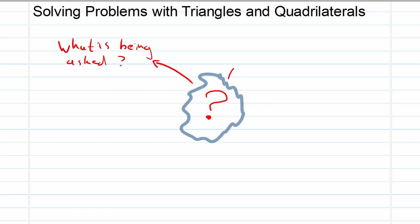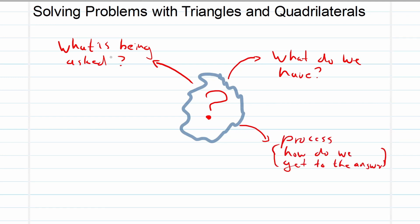Secondly, what information do we have? Look at your diagram — what are the properties of your triangles or quadrilaterals? So: what is being asked, what do we have, and then thirdly, our process — how do we get to the answer? And fourthly and finally, test your answer.